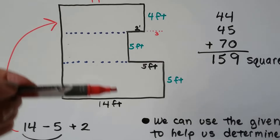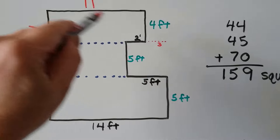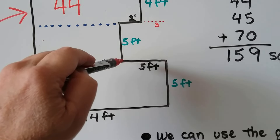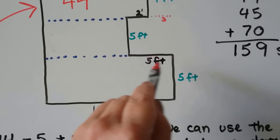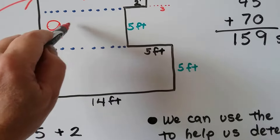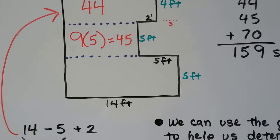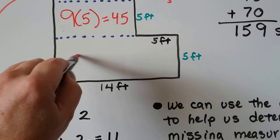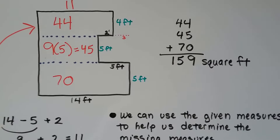If we split this into 3 rectangles, all we have to do is 4 times 11 — that's going to give us 44. Then this is 5 feet. To find this one, we do 14 feet minus this 5 feet — that's going to give us 9. So we're going to do 9 times that 5, and that's going to be 45. The only thing left is 14 times 5, and 14 times 5 is 70. So now all we have to do is add the 44, the 45, and the 70 together and we get 159 square feet.